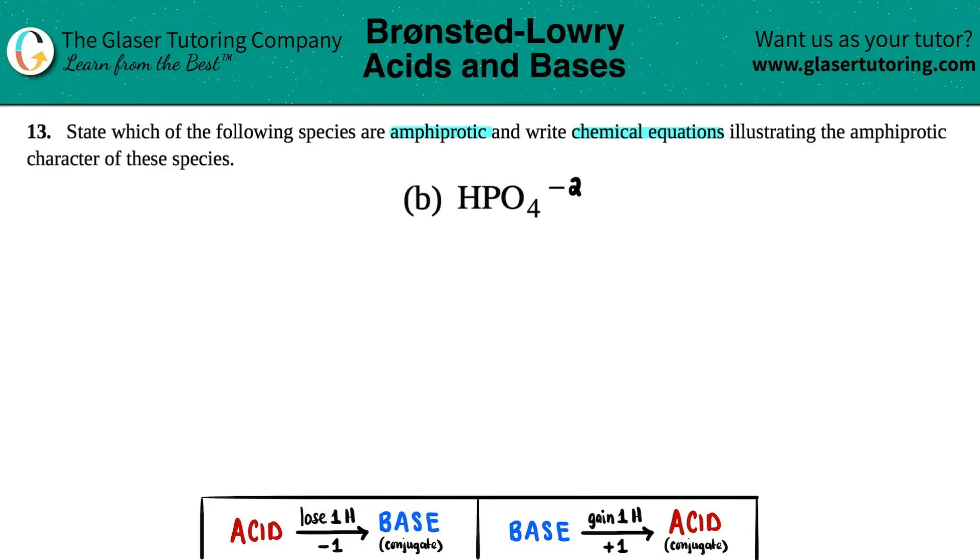Now let's determine whether this ion is amphiprotic. Another word for amphiprotic is amphoteric, so your teacher or professor might talk about amphoteric species. That just means that one single ion or molecule can act as an acid and has properties to act as a base.